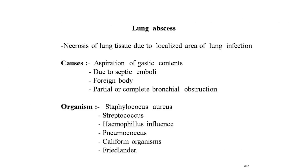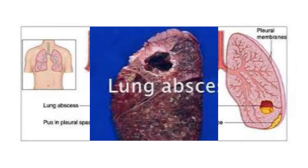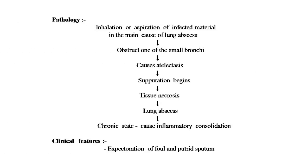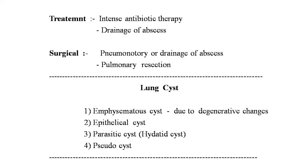Lung abscess: necrosis of lung tissue due to a localized area of lung infection. Causes: aspiration of gastric contents, septic emboli, foreign body, partial or complete bronchial obstruction. Organisms: Staphylococcus, Streptococcus, Haemophilus influenzae, Pneumococcus, Coliform organisms, and Friedlander's bacillus. Here is a picture of lung abscess clearly seen on chest film at the left side. Pathology: inhalation or aspiration of infected material obstructs one or more small bronchi, causing tissue necrosis and lung abscess formation; in the chronic state, inflammatory consolidation forms. Clinical features: expectoration of foul and putrid sputum. Treatment: intense antibiotic therapy, drainage of the abscess, surgical treatment — pneumotomy or pulmonary resection.